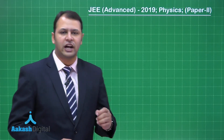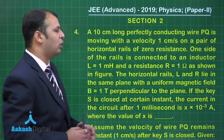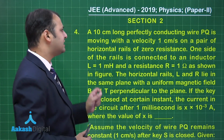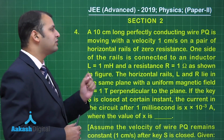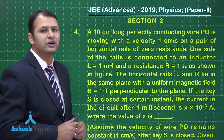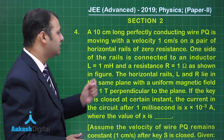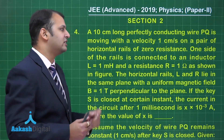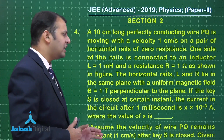Let's take our next question, that is question number 4. This question belongs to chapter electromagnetic induction. As per the question, a 10 centimeter long perfectly conducting wire PQ is moving with a velocity of 1 centimeter per second on a pair of horizontal rails of zero resistance. One side of the rails is connected to an inductor of 1 milli Henry and resistance of 1 Ohm, as shown in the figure.